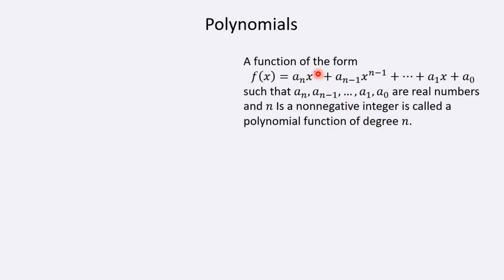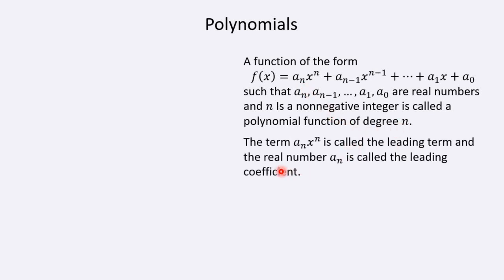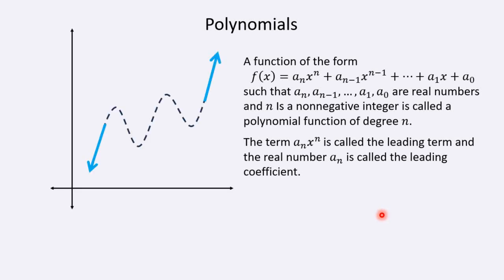Notice that n is the largest power of the independent variable x, and that is why it is the degree of this polynomial. The term that gives the polynomial its degree has a special name: a-sub-n times x to the n is called the leading term, and the real number a-sub-n is called the leading coefficient. The leading coefficient is helpful in telling us the shape of the graph of the polynomial.